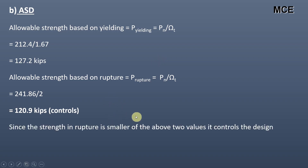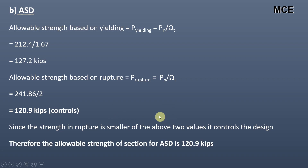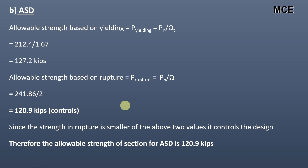Again, the strength in rupture is the smaller of the two values, so it controls the design. Therefore, the allowable strength of the section for ASD is 120.9 kips. This represents the procedure for calculating the design and allowable tensile strength in the case of welded connections.